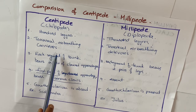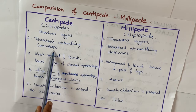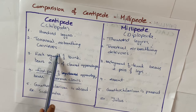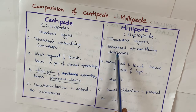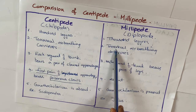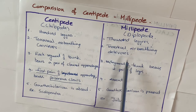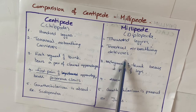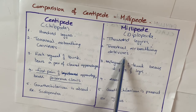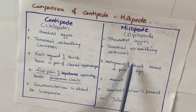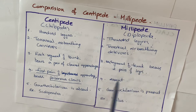The food of centipedes is the flesh of other animals, that's why they are carnivores. Millipedes are also terrestrial and air-breathing, but they are detritivores — meaning they feed on dead and decaying matter.